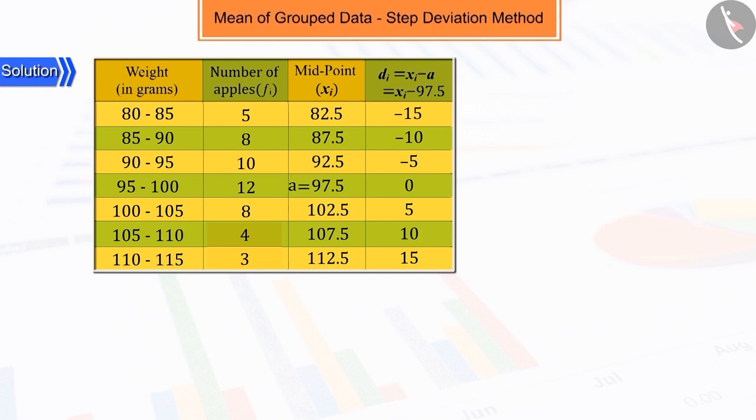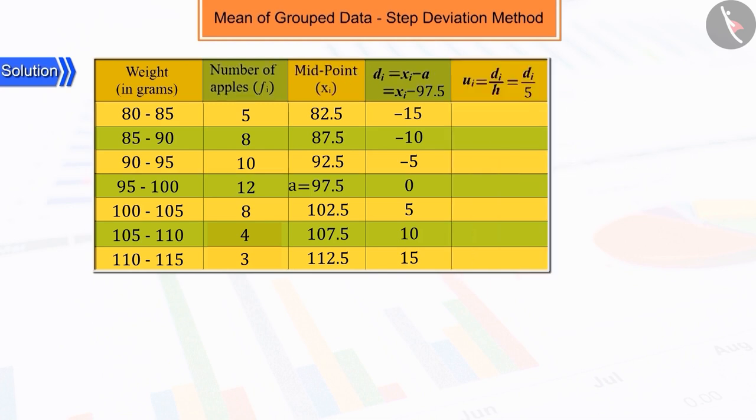To further simplify the mean, we will use the step deviation method where we calculate the UI, that is, divide the DI by the class interval H, which is 5, and form a table.